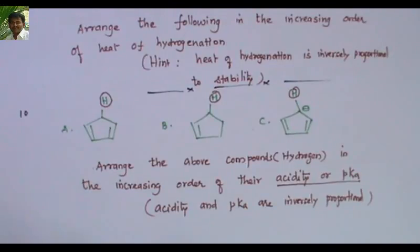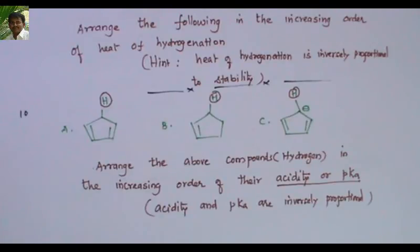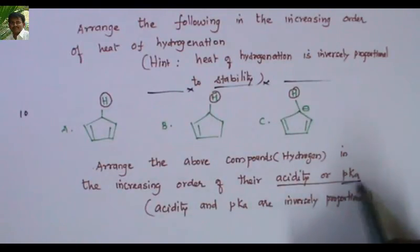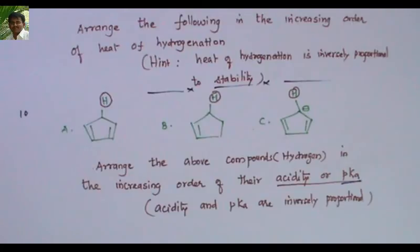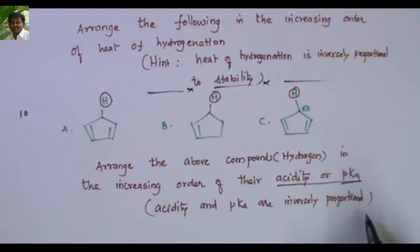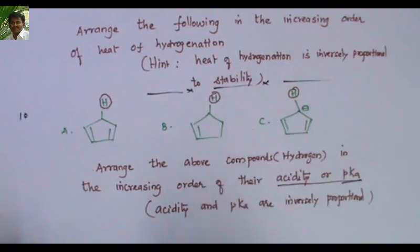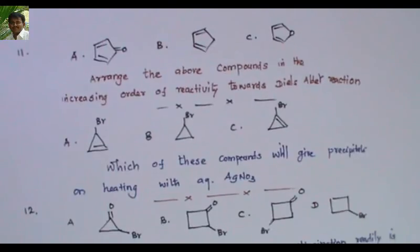Next problem: arrange the above compounds' bracketed hydrogens in the increasing order of their acidity — sometimes this may also be expressed as pKa. A hint is given: acidity and pKa are inversely proportional. Arrange in increasing order of acidity, which corresponds to decreasing order of pKa.